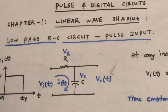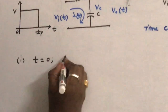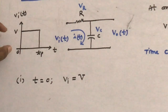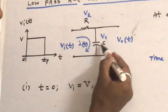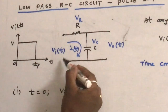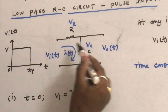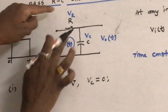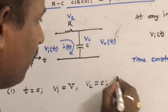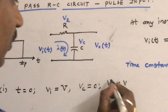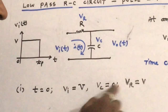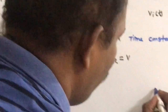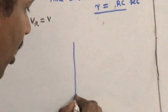First, at T equals 0, from the diagram the input voltage is Va equals V. At this time, assume that the initial voltage across the capacitor is 0. So when you apply the input voltage at T equals 0, the voltage across the capacitor is 0. Therefore the entire voltage V appears across the resistor, so Vr equals V. This confirms Vc plus Vr equals V. Let us draw the output response graph.